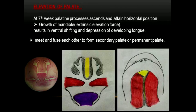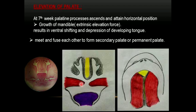Next is elevation of the palate. At the 7th week of intrauterine life, both palatine processes ascend and attain a horizontal position. This happens because the developing tongue is depressed due to growth of the mandible below. This growth of the mandible acts as an extrinsic elevation force from below. As seen here, the tongue moves downwards so that both palatine shelves or processes attain a horizontal position and come close to each other. The middle picture is a coronal section of the developing embryo showing both palatine processes very close to each other.